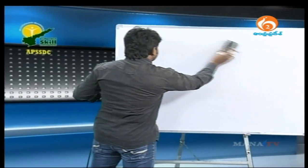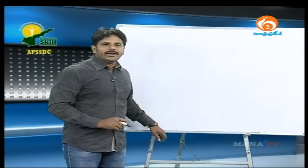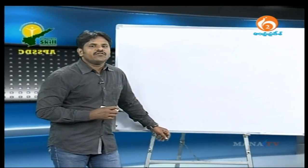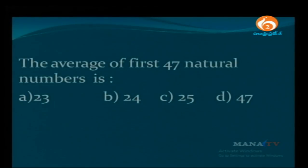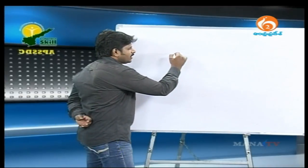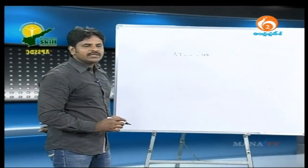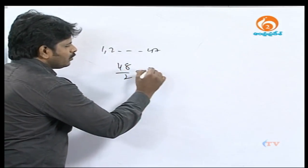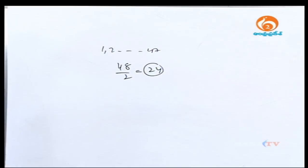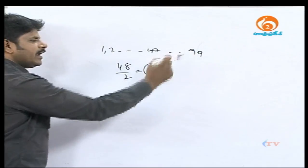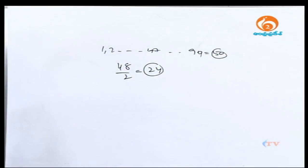To summarize: sum of natural numbers is N(N+1)/2, average is (N+1)/2. Sum of squares is N(N+1)(2N+1)/6, average is (N+1)(2N+1)/6. Sum of cubes is [N(N+1)/2]², average is N(N+1)²/4. For example, the average of first 47 natural numbers: first number 1, last number 47 — (1+47)/2 equals 48/2 equals 24. For 99 natural numbers: (1+99)/2 equals 50. Very simple.